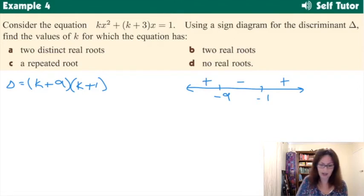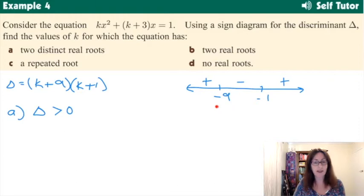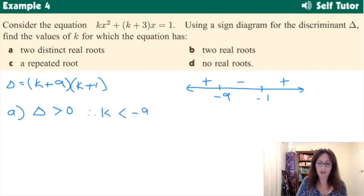All right, so now let's get into answering part A, B, C, and D. Part A, two distinct real roots. What does that mean for the discriminant? We need it greater than 0. So now you come and have a look at your sign diagram. When is it greater than 0? You're looking at the positive regions here. So for the first one, it's when k is less than negative 9 and k is greater than negative 1. Probably worth putting here as well that k cannot be equal to 0 because if it was, think about the function here, we wouldn't have a quadratic anymore.